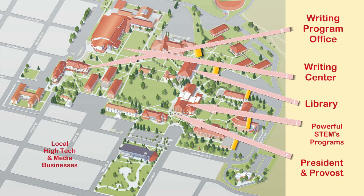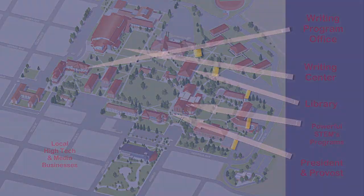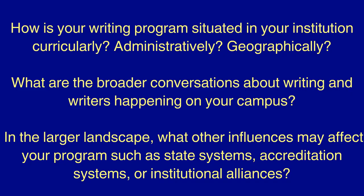Are there forces external to your campus, such as local business leaders, that impact your writing program? After you have completed the written worksheet and visualization of your campus writing program, spend some time reflecting upon and writing about the following questions: How is your writing program situated in your institution — curricularly, administratively, geographically?